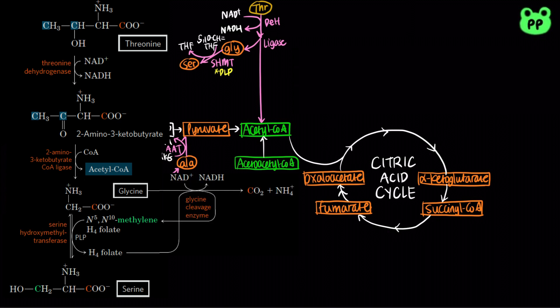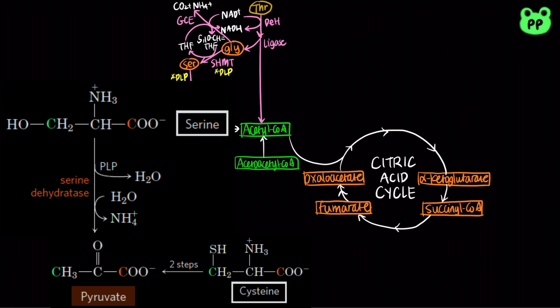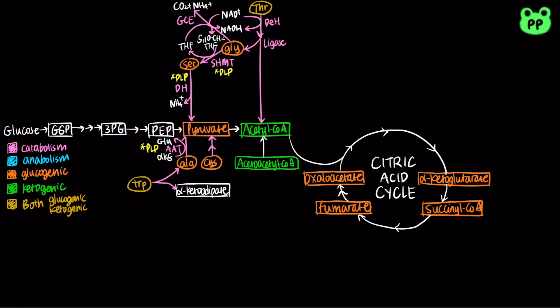Glycine can also undergo oxidative decarboxylation by glycine cleavage enzyme, abbreviated as GCE, also known as glycine synthase, producing carbon dioxide and ammonium ion. This reaction is coupled to the reduction of NAD+ to NADH, and tetrahydrofolate serves as a one-carbon acceptor. Serine dehydratase, abbreviated as DH, then removes both the alpha-amino group and beta-hydroxyl group of serine, which also requires the cofactor pyridoxal phosphate, to produce pyruvate. Finally, cysteine can also be degraded to pyruvate in two steps: one removes the sulfur atom and the other is a transamination reaction. From these pathways, tryptophan, alanine, threonine, glycine, serine, and cysteine can all enter the citric acid cycle through pyruvate.